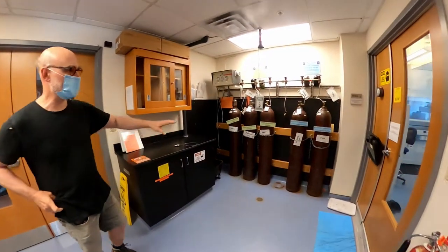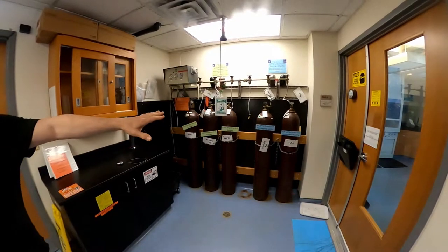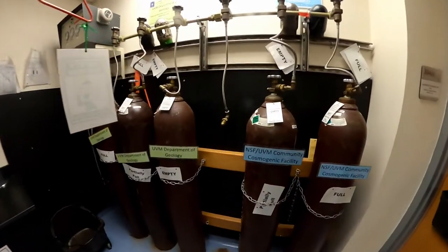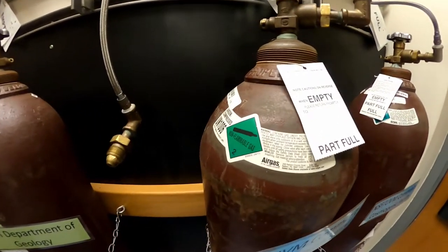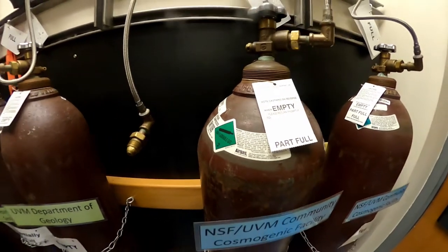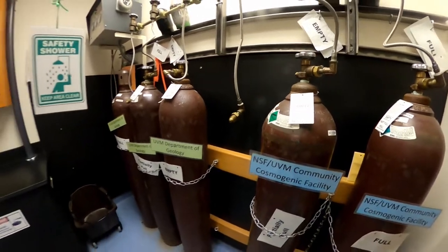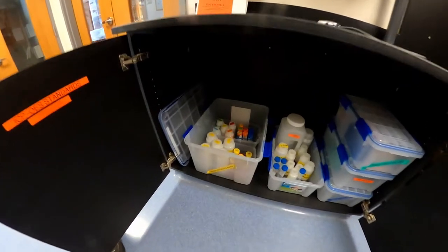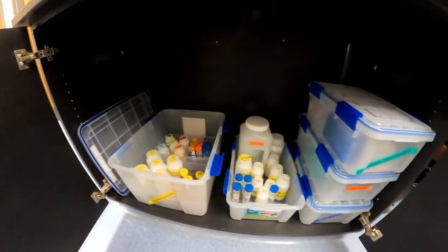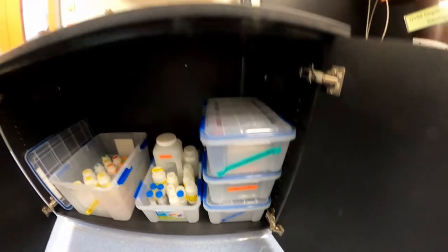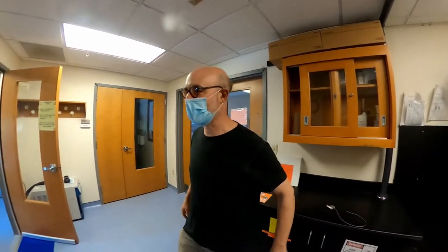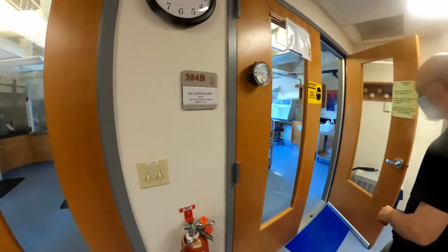So this is our ICP laboratory vestibule. We have two tanks of argon gas here. And that's what we use to make that plasma is this argon gas. And we get about 12 hours of runtime off one of those tanks of gas here. We have all our standards for the machine down here. This is a vented cabinet. So any acid fumes that come off these go up that chimney pipe and we don't want to breathe them, which keeps us safe. And Nico and I are wearing our personal protective gear today because we're within six feet of each other. So we're trying to be safe. This is our ICP lab.